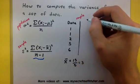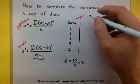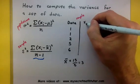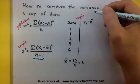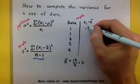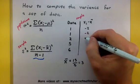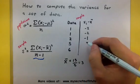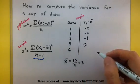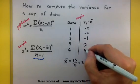So what I'm going to do is take each of my data points and subtract 3. So 1 minus 3 is negative 2, 1 minus 3 is negative 2, 2 minus 3 is negative 1, 5 minus 3 is positive 2, and 6 minus 3 is 3.